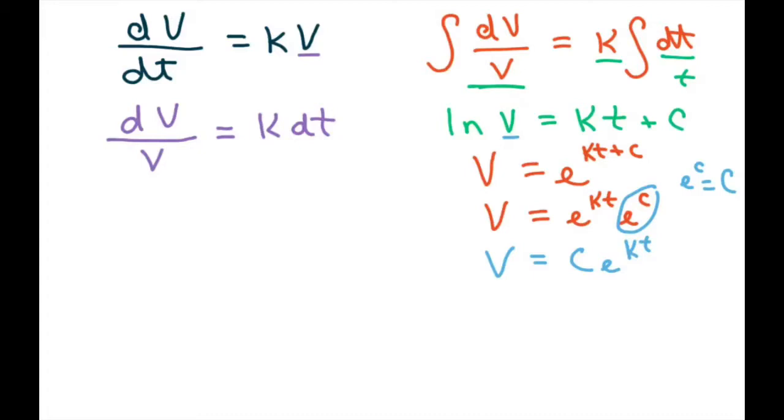Now, we can use the initial condition that v equals 8 at time equals 0 to solve for C. So basically, we're going to get our v is 8, using this, equals C. And then, we have e to the 0t.